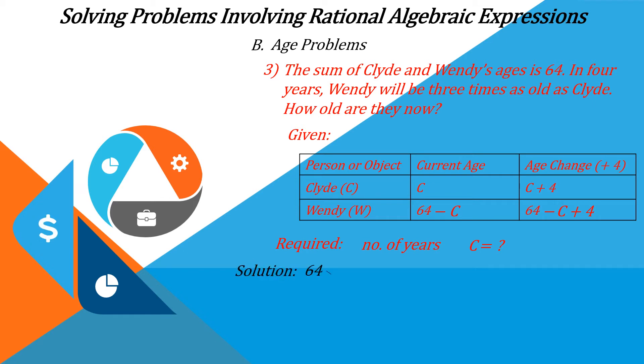For the solution, we take the conditions stated in the problem. Wherein 64 minus C plus 4 is equal to 3 times C plus 4. And simplifying this equation, we have 68 minus C is equal to 3C plus 12.